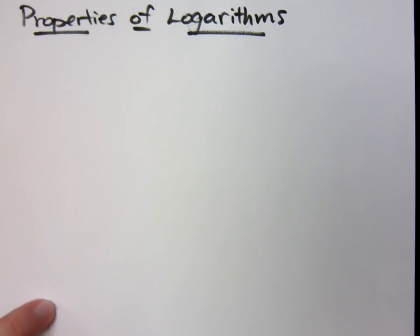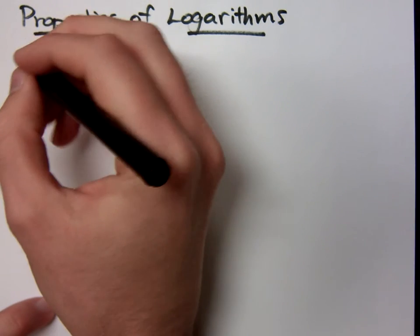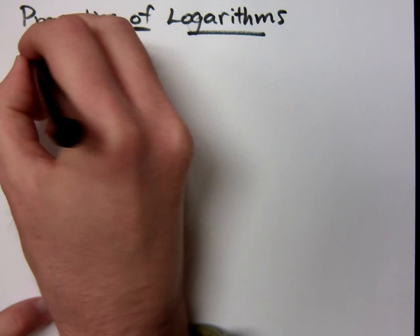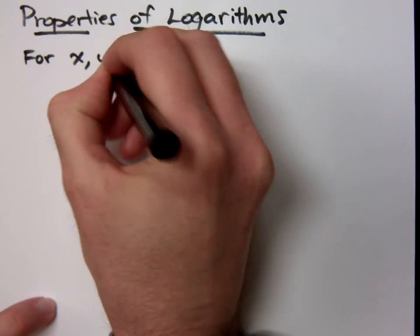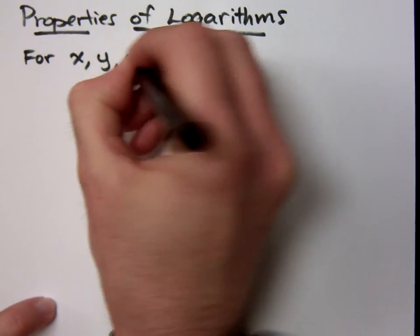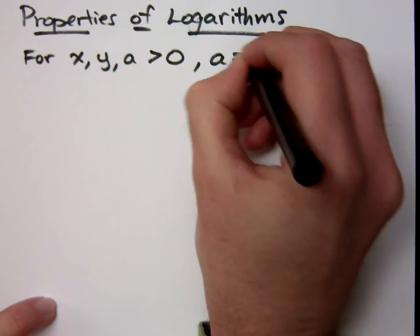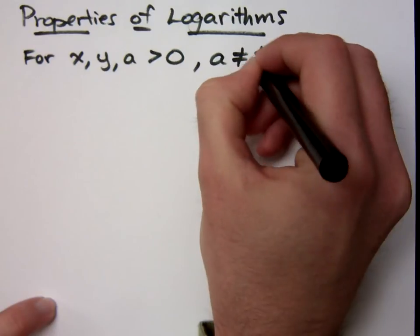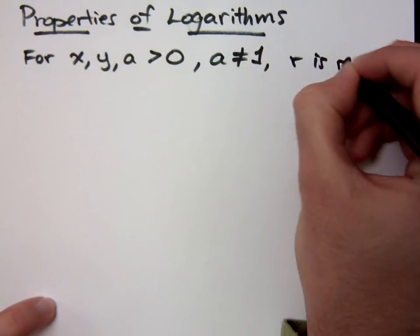There are some nice properties we have for logarithms, just like there are properties for exponents. There are a lot of similarities between the two, since they are inverses of each other. These properties apply when x, y, and a are all greater than 0, a does not equal 1, and r is a real number.